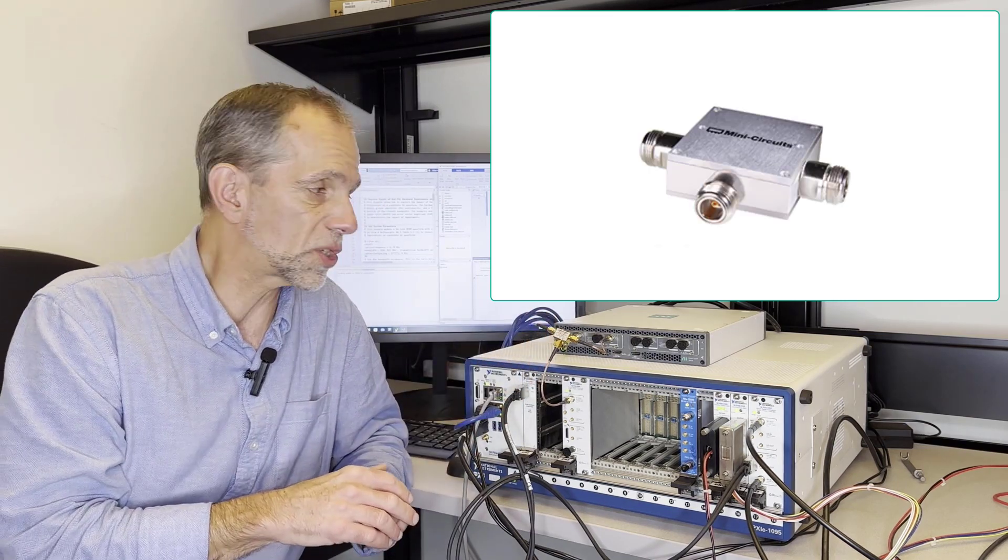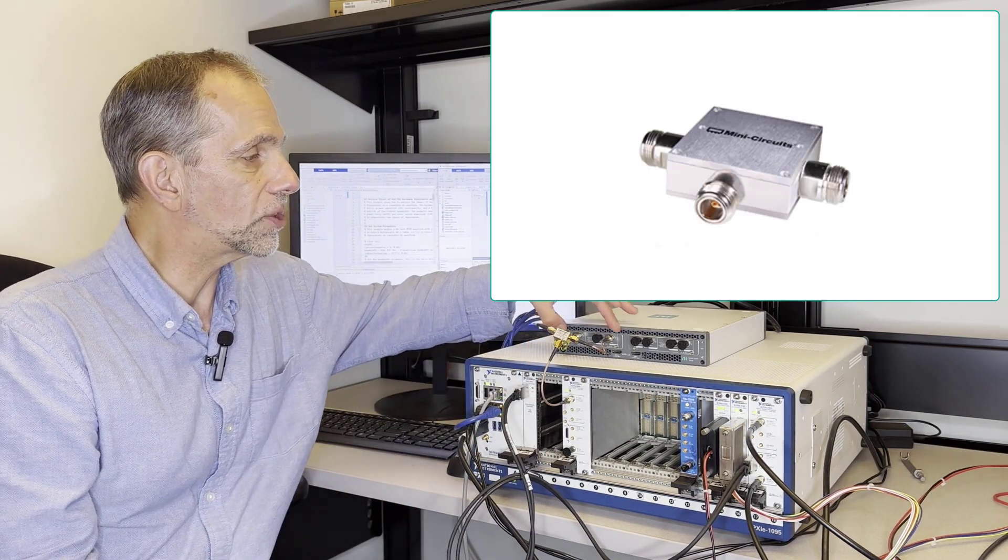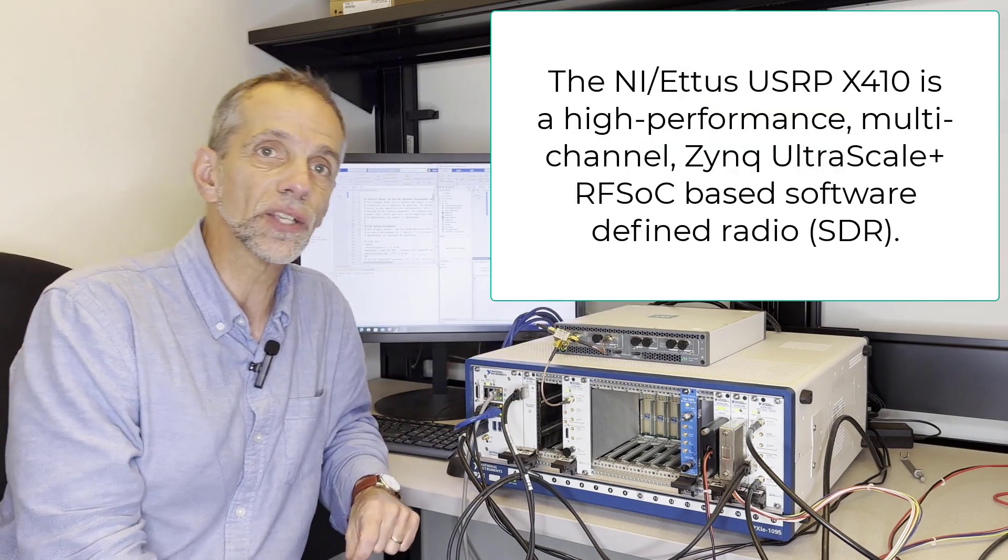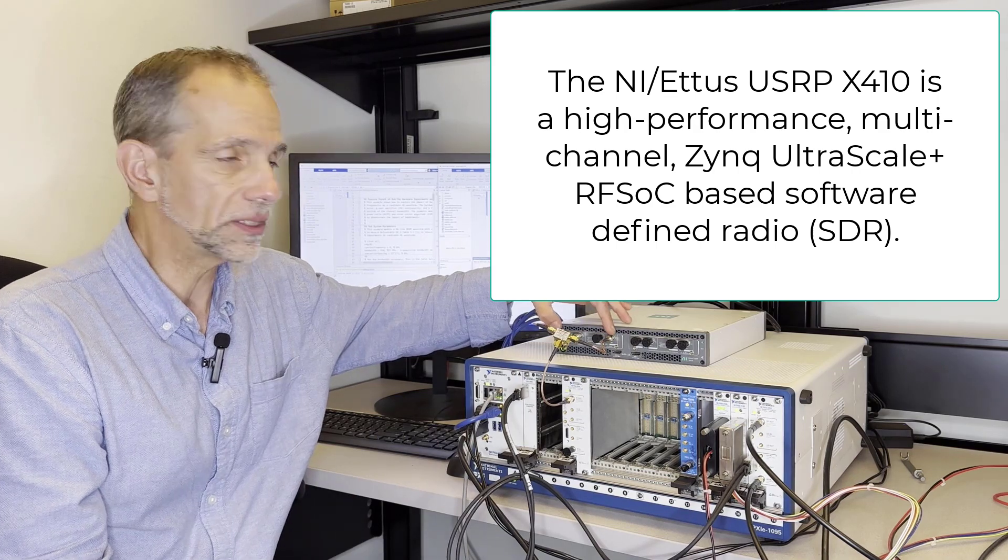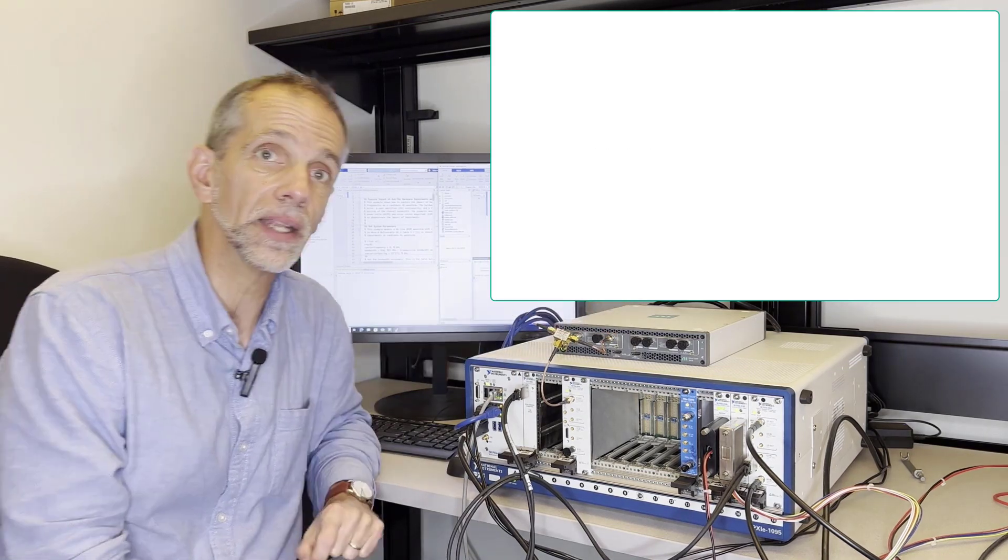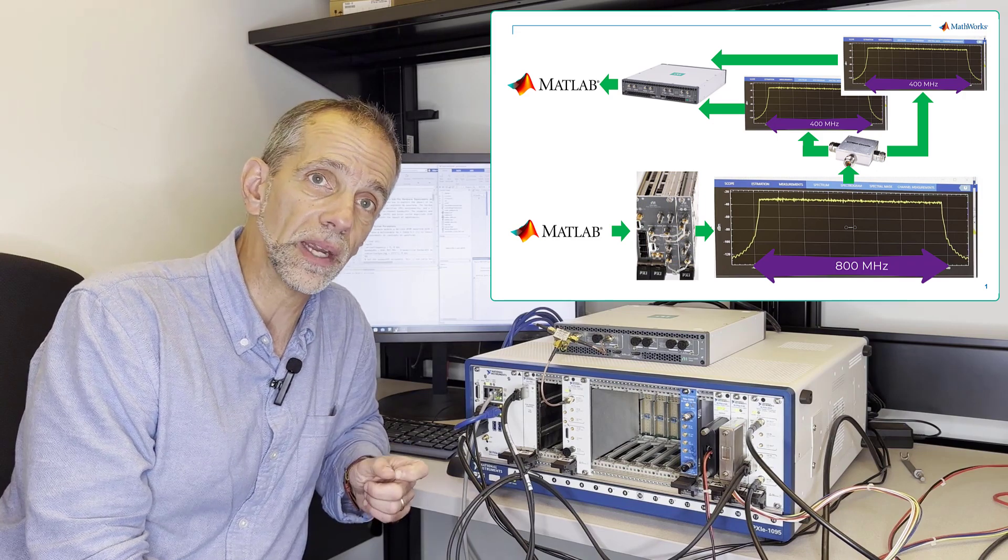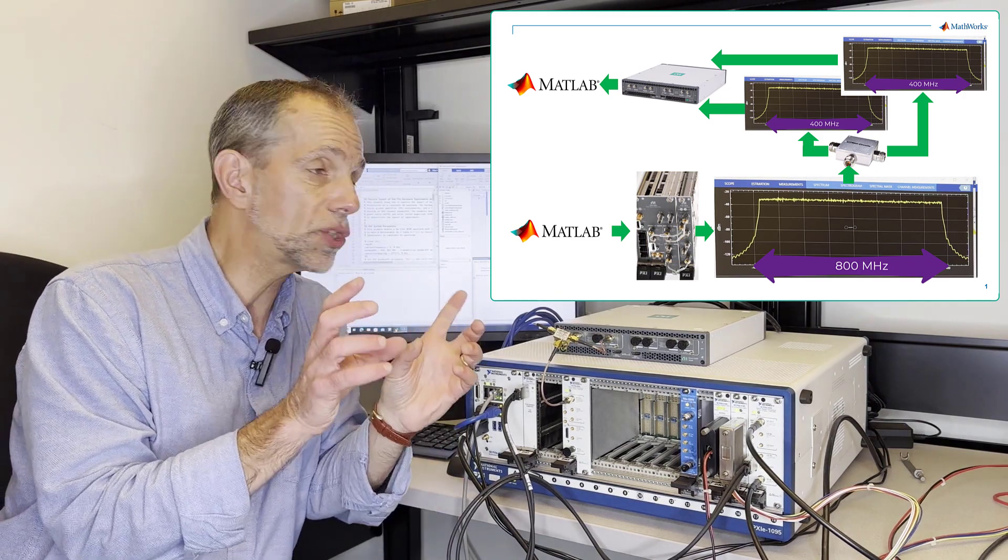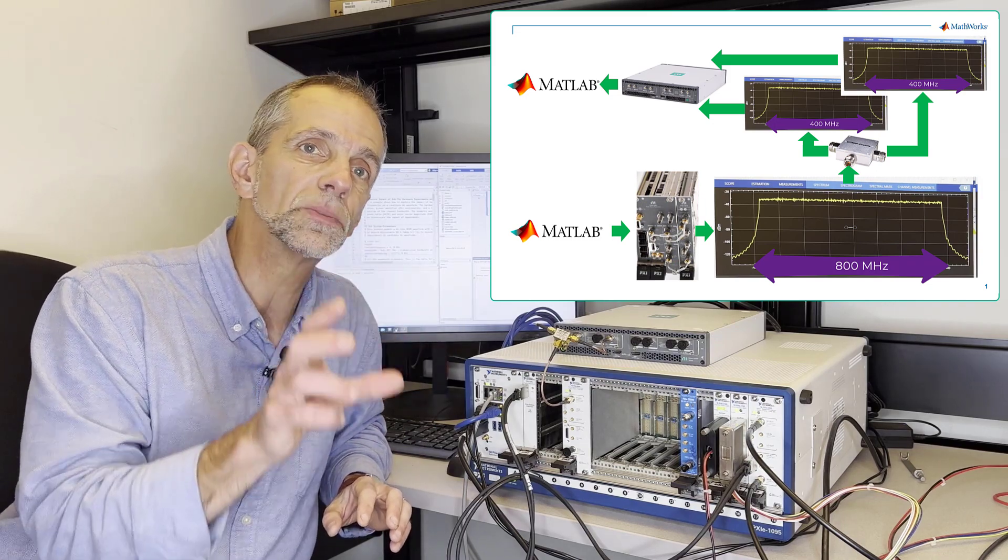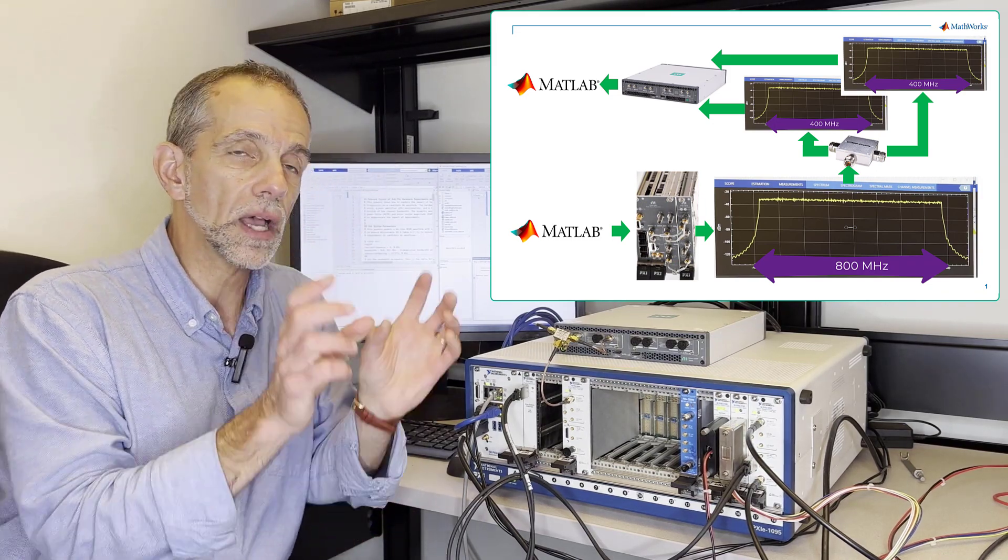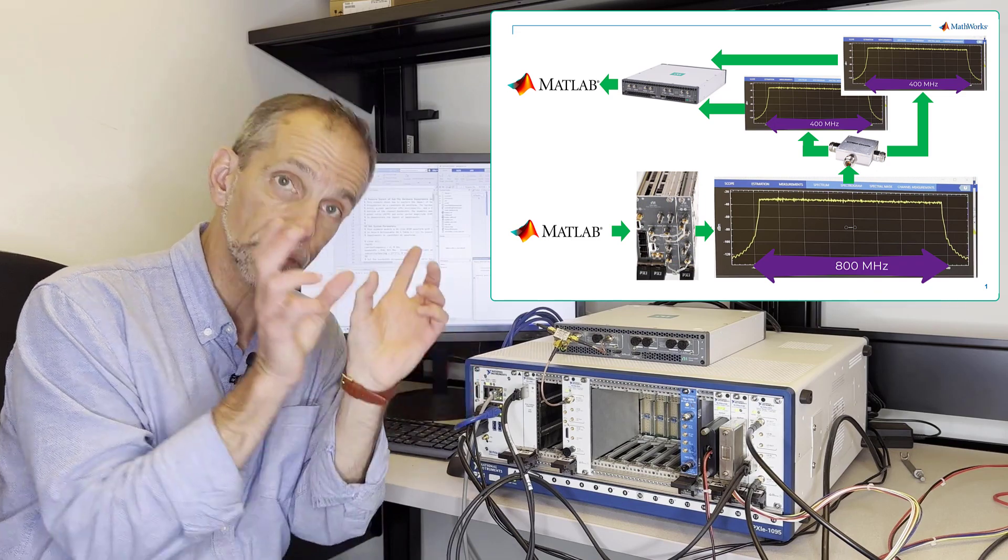We go into this mini circuit splitter, and then we go into two channels into this NI X410 USRP radio. 800 megahertz inside, but the max bandwidth on each channel of the X410 is only 400 megahertz. So each channel filters down to 400 megahertz, but in contiguous bands. So you've got two 400 megahertz signals.